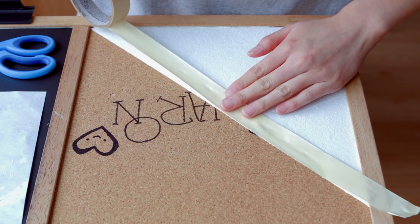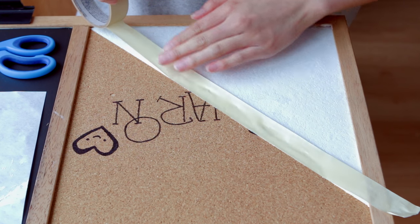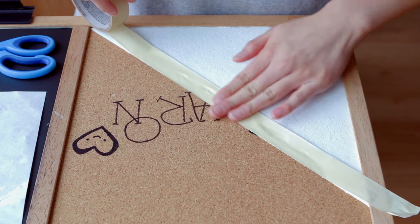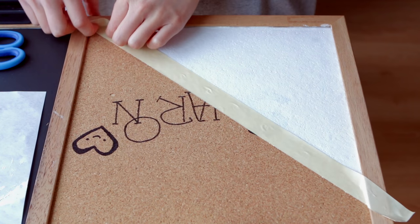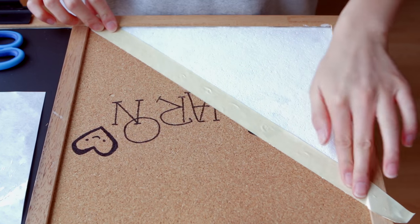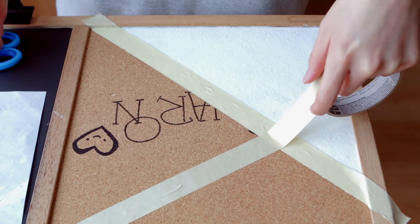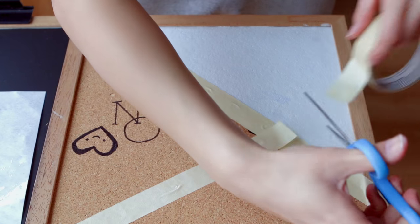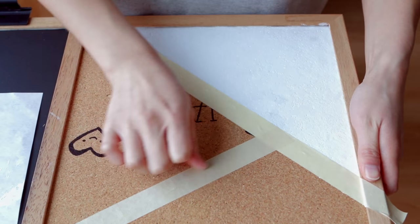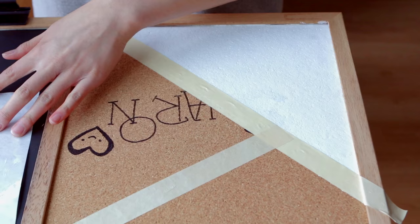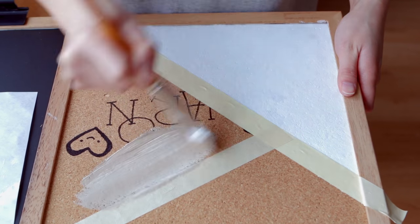So once your first section has dried, go ahead and tape off your second section that you want to paint. I'm just doing another triangle here, making sure that the edges and corners are lined up once again. And yes, it's okay to tape over the section that you just painted as long as the paint is dry. So you guys know the drill. Once you have taped off your section, just go ahead and start painting away.